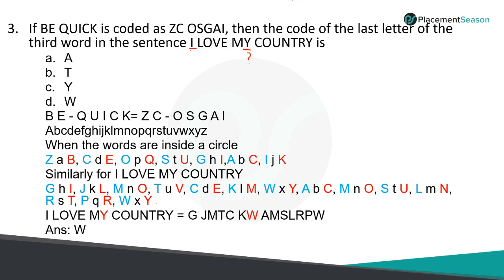Our question is: what is the last letter of the third word? The last letter of the third word is Y. Coming to this, Y coded two steps back gives W. So W is your answer. This is coding and decoding.